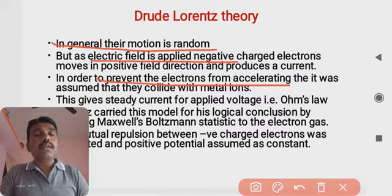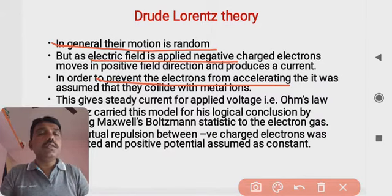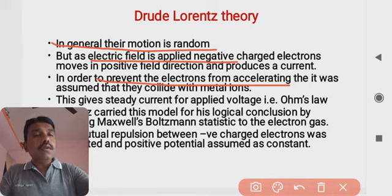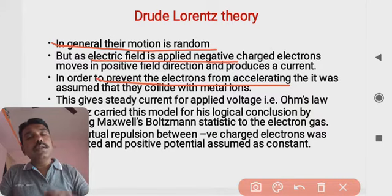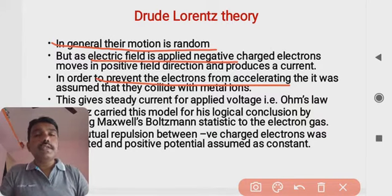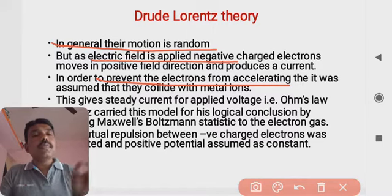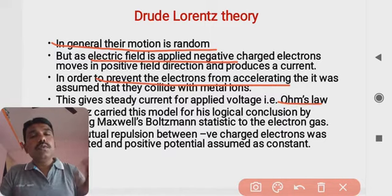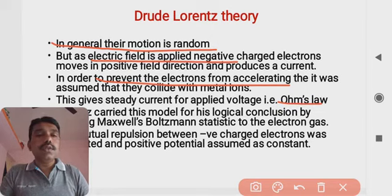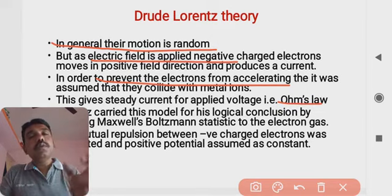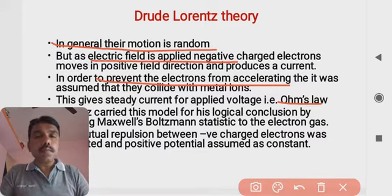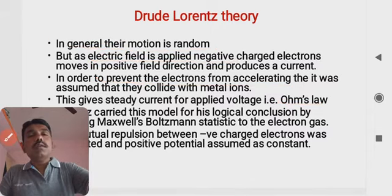In order to prevent the electrons from continuously accelerating, it was assumed that they collide with the metal ions. These collisions prevent unlimited acceleration, giving a steady current flow through the metal at the applied voltage. This steady output is nearly equivalent to Ohm's law — current flows in proportion to the applied voltage.